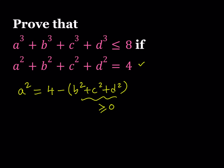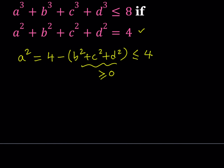We're subtracting a non-negative quantity from 4, so the result is less than or equal to 4. If the sum is 0, a squared equals 4. If the sum is greater than 0, the difference is less than 4. So this gives us a very important piece of information: a squared is less than or equal to 4.